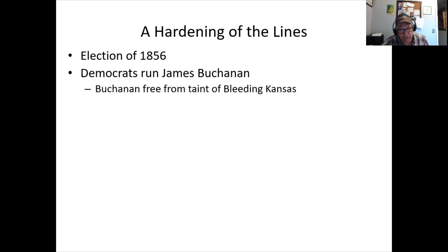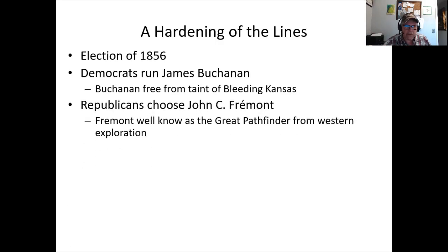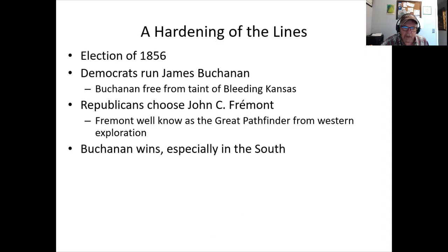1856 is a prelude. James Buchanan has historically gone down as the worst president ever. He's not tainted by the antagonism and destruction around Bleeding Kansas and Kansas-Nebraska, which makes him a more palatable candidate. But as the country devolves and splits, he sits around and does nothing. Look up any list of worst presidents — he's always at the top. John Fremont, the great pathfinder who made his name exploring the West, runs on the new Republican ticket but doesn't win; the party is too new.